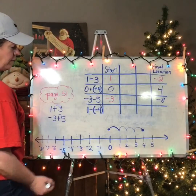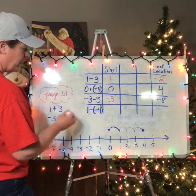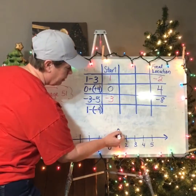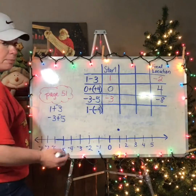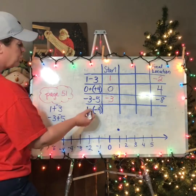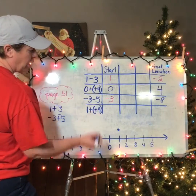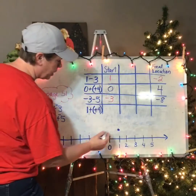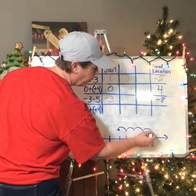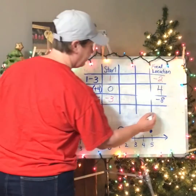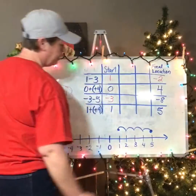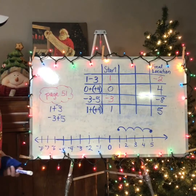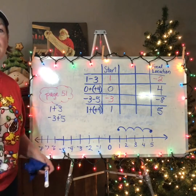Now let's look at 1 minus negative 4. I know I'm going to start at one. And I don't know what to do for minus negative four, but I know subtraction is the same as adding the second number opposite. So adding positives moves me to the right four times: one, two, three, four. Then I end up at positive five. So always remember — subtraction is the same as adding the opposite.